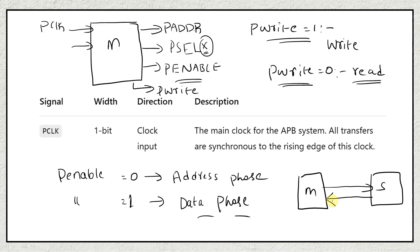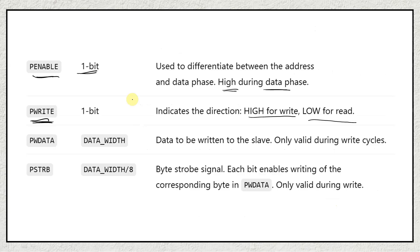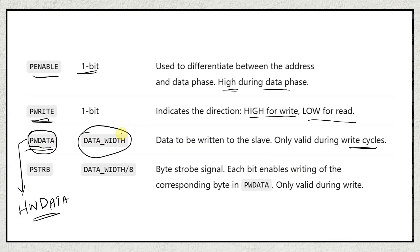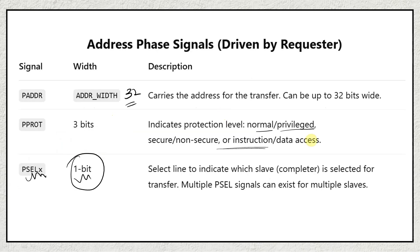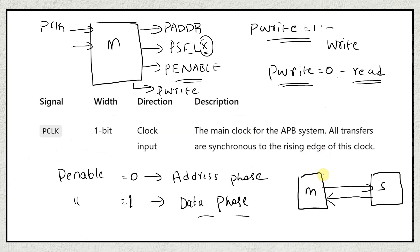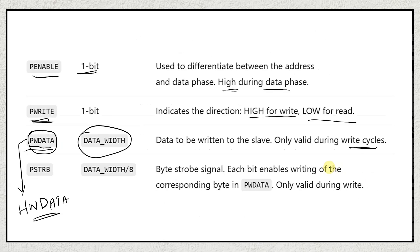Next is PWDATA — the data to be written to the slave, only valid during write cycles. This is similar to HWDATA in AHB protocol. Depending on bus width it can be 32-bit, 64-bit, or 16-bit. Using the PWDATA bus, the master performs a write operation and the slave receives the data. PSTRB is an optional signal we will skip, similar to how we handled it in AHB protocol discussion.